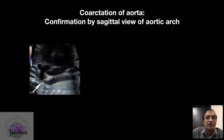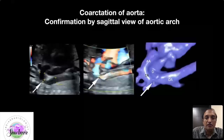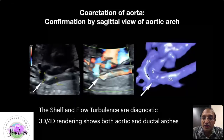Confirmation of the diagnosis is made by using the sagittal view of the aortic arch, where you see the narrowing that is very highly suggestive of coarctation of the aorta. The last picture is a 3D rendered image showing both the aortic arch and the ductal arch, the ductal arch marked as D just below it.